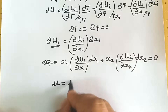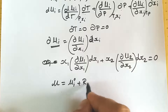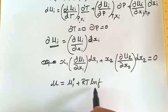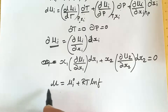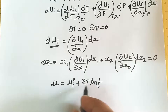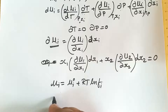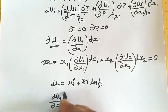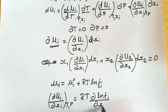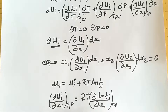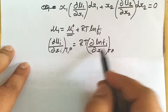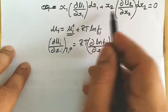We know that chemical potential μ is related to fugacity by the relation: μ equals μ0 plus RT ln f, where μ0 is the chemical potential in its standard state. We need to convert μ into this form, so we differentiate with respect to xi. Upon differentiating, (∂μ1/∂xi) at constant T and P equals RT times (∂ ln fi/∂xi) at constant T and P. Since μ0 is a constant, its differentiation equals zero.